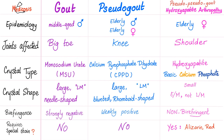Does gout require a special stain? No. Pseudogout? No. Hydroxyapatite? Yes — it requires a special stain known as alizarin red. The exam question will describe these crystals as very small, appearing as red clumps using a special stain, aspirated from the shoulder of an elderly woman with shoulder pain.